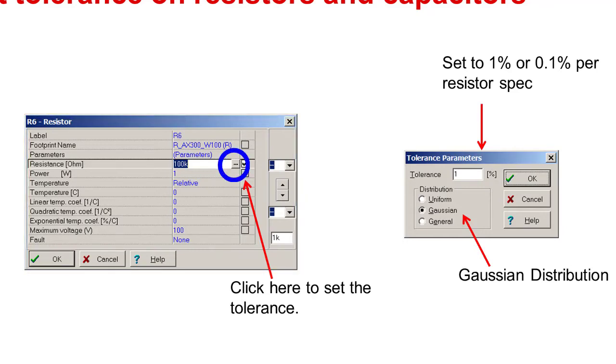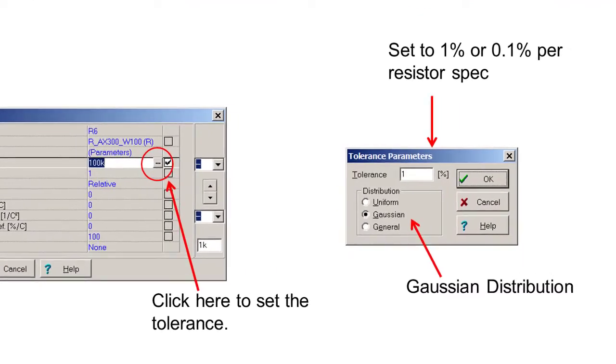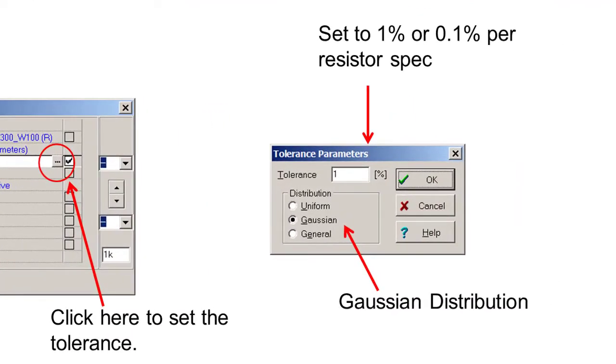Press the button next to the resistance and a window to set the tolerance parameters will pop up. In this window, set the tolerance according to your design and use Gaussian for the distribution type. In this example, we are using 1% resistors.